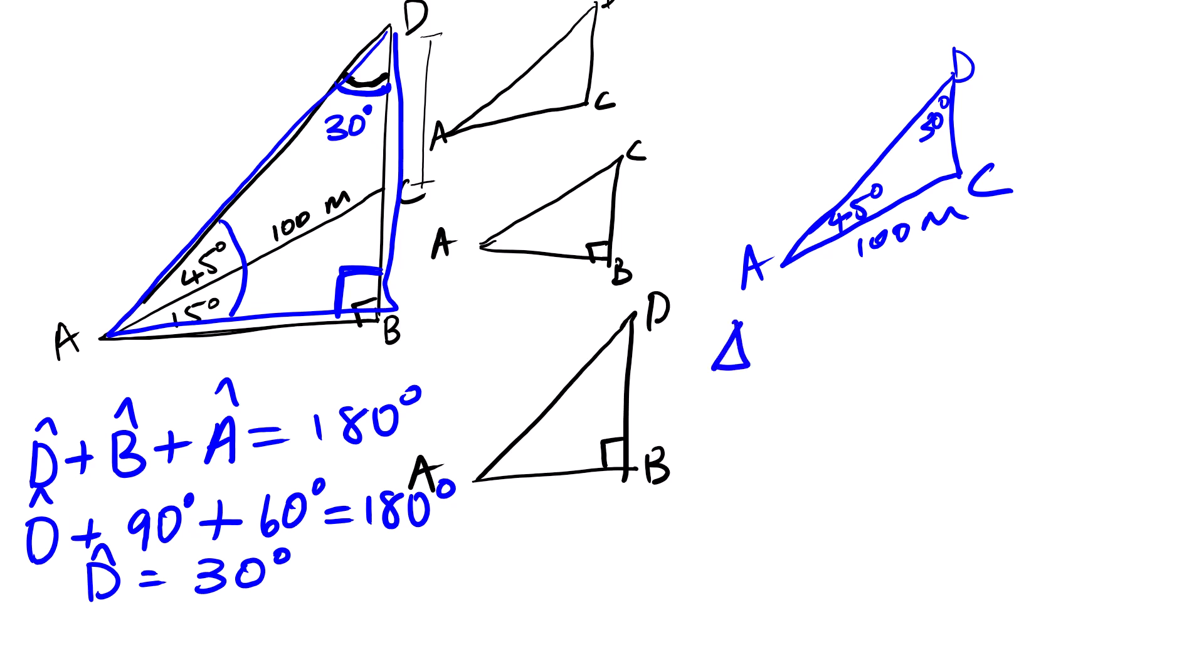So angle A, C, D, and then it's sine A over A equals sine D over D. We know that this is angle, actually this is side C, this is side A, and then this is actually side D.